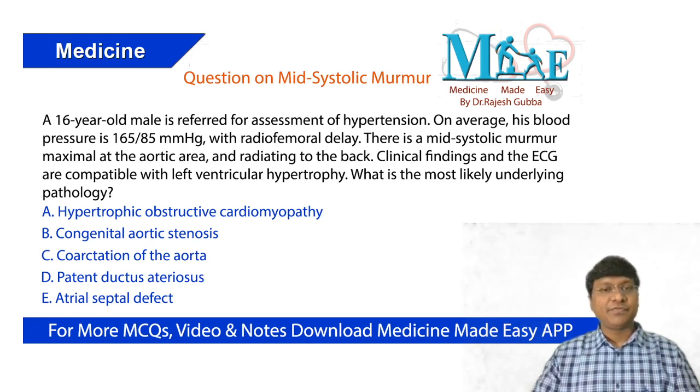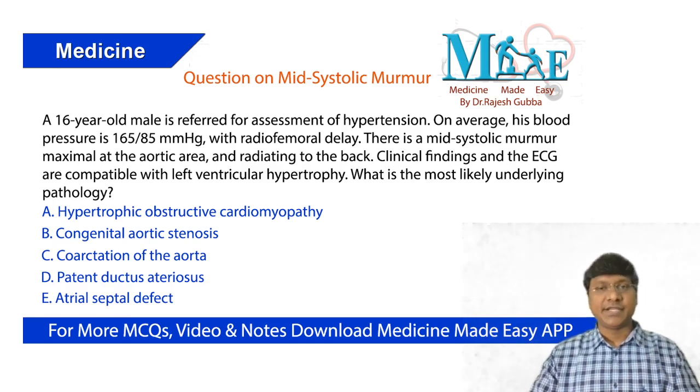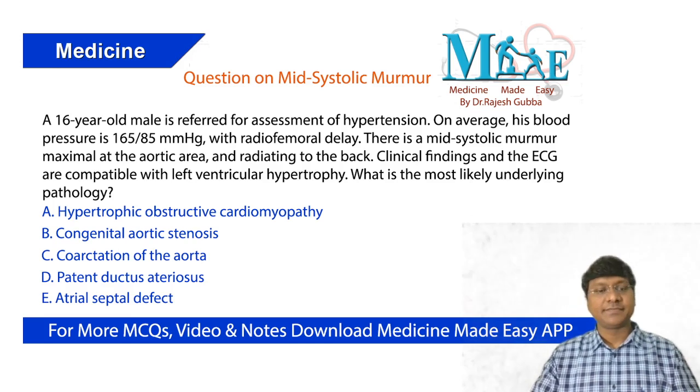The options are: hypertrophic obstructive cardiomyopathy, congenital aortic stenosis, coarctation of aorta, patent ductus arteriosus, or atrial septal defect.